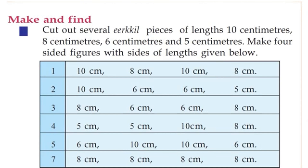The activity is: cut out several pieces of length 10 cm, 8 cm, 6 cm, and 5 cm. Make four-sided figures with sides of the given lengths. The length of the rectangle is the same as four-sided figures. Make a rectangle — mark up your rectangle.